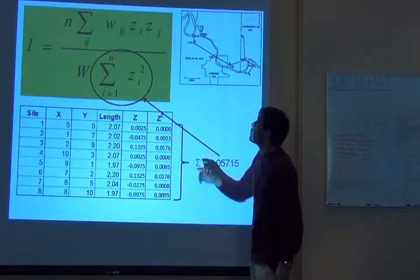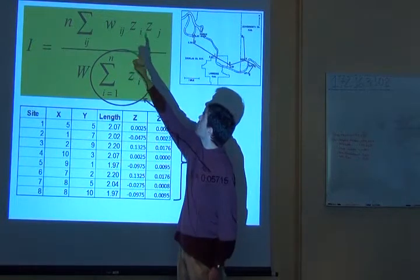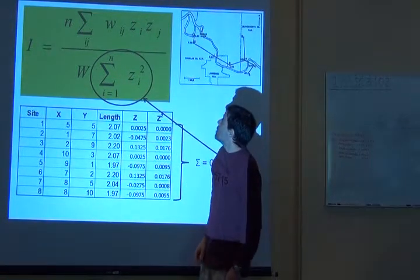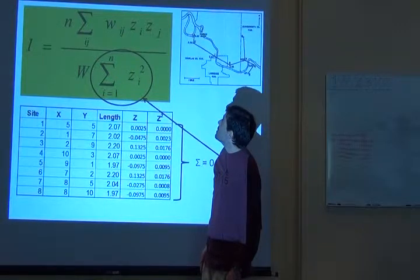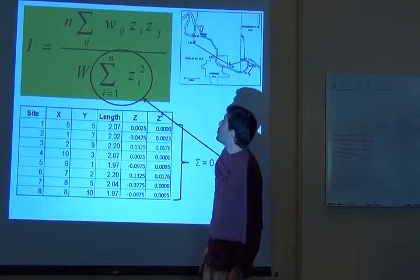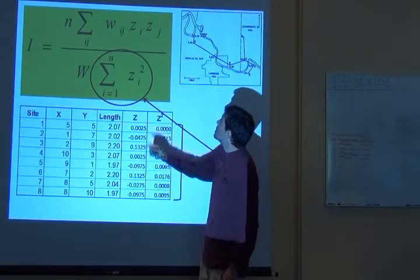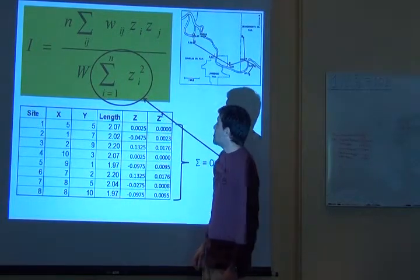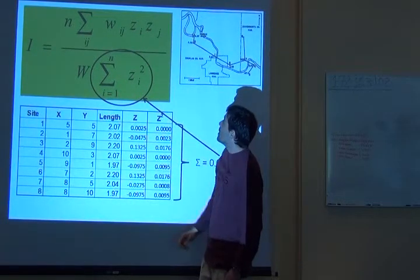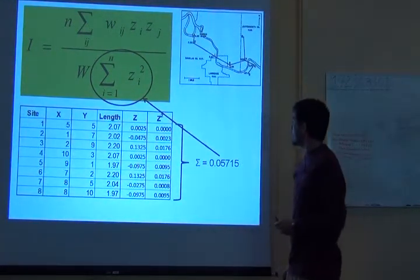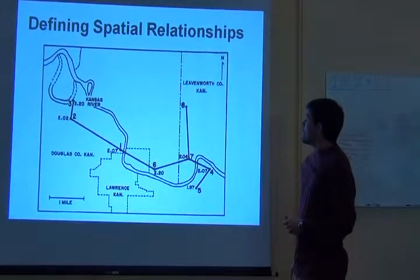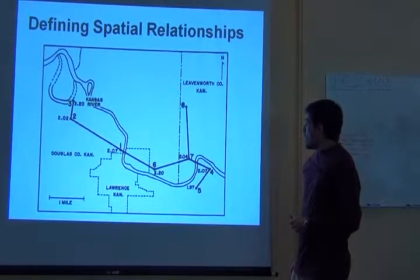Now we need to figure out what the hell is this one. It's wij and then we are multiplying z. It should be pretty easy. zi, zj, not a problem. And then we're going to sum this thing too.